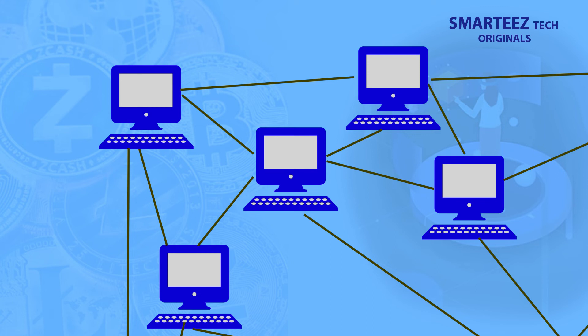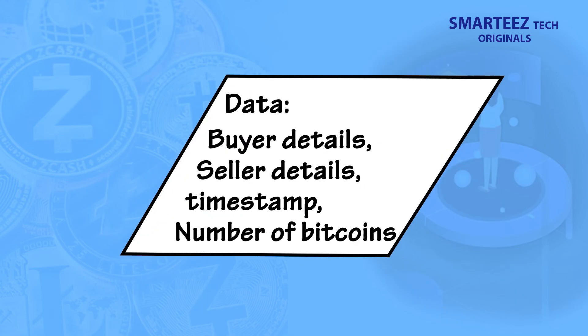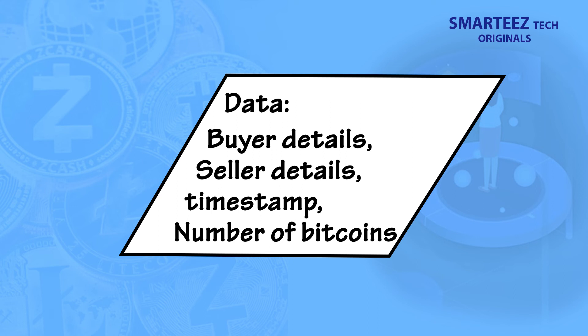The transaction is permanent, and a copy exists in all the computers — it cannot be altered or removed. The data maintained in the transaction includes at a minimum the buyer and seller details, a timestamp, and the amount, meaning the number of bitcoins used for the transaction.